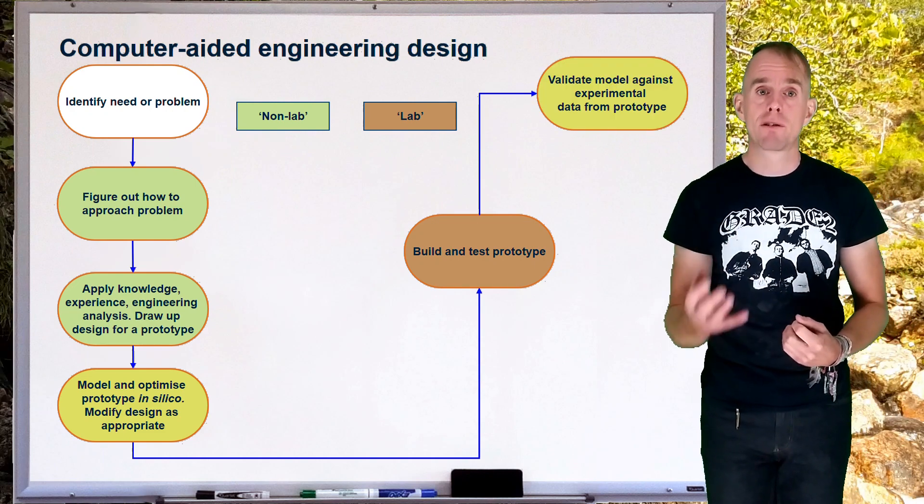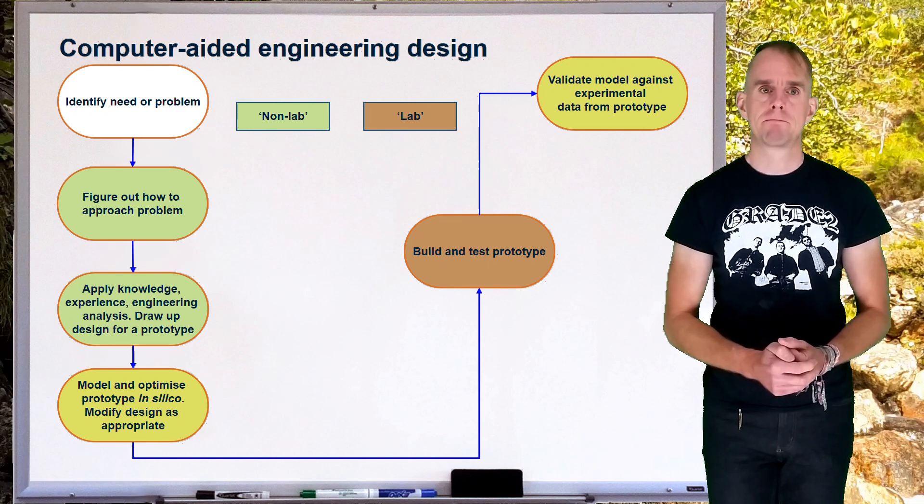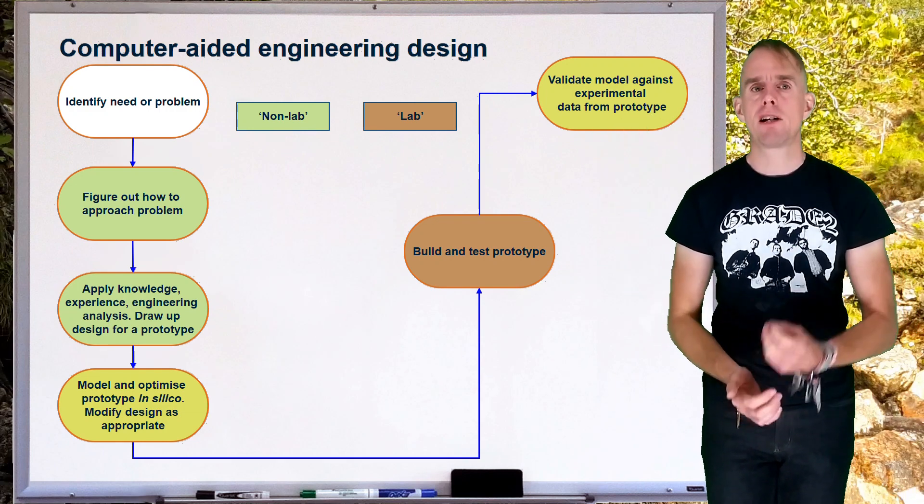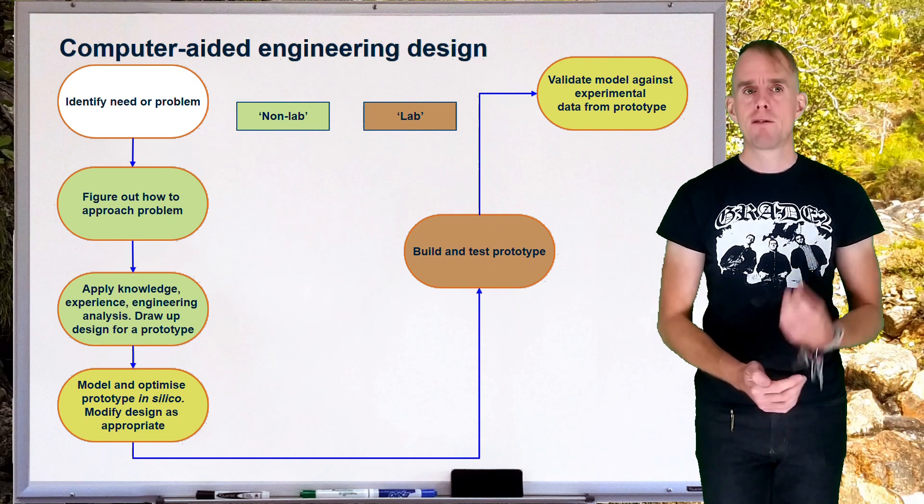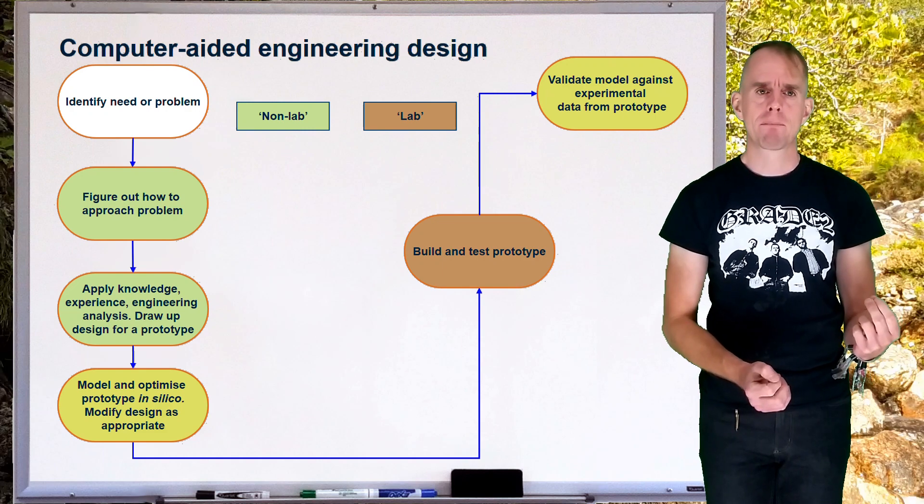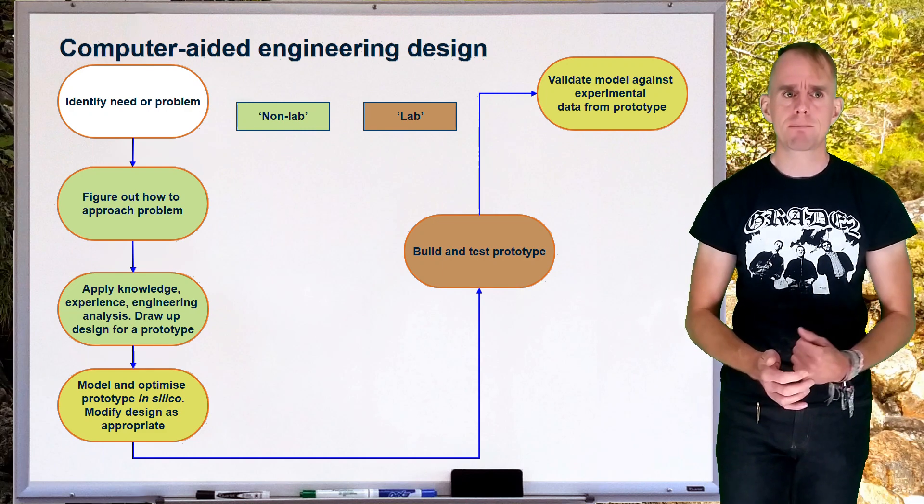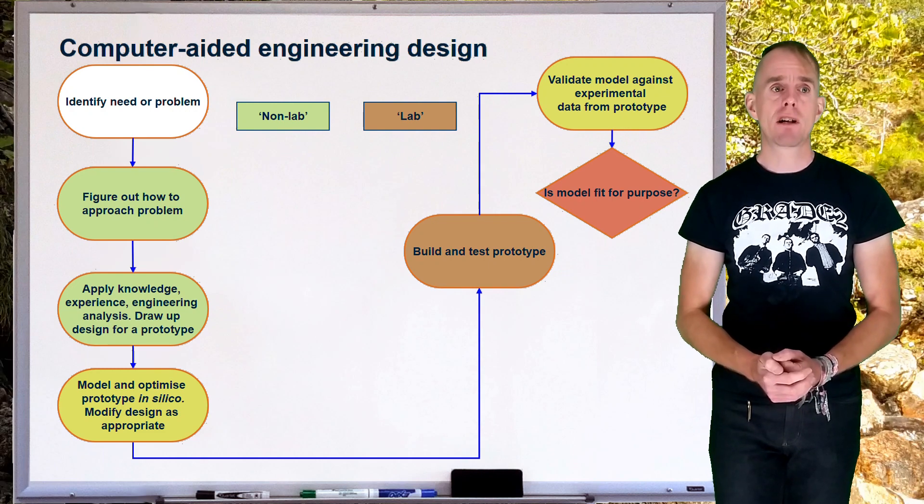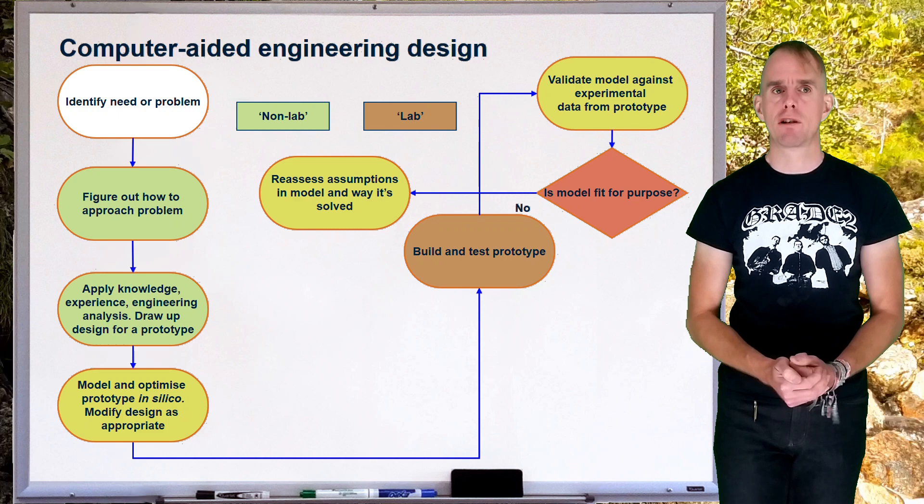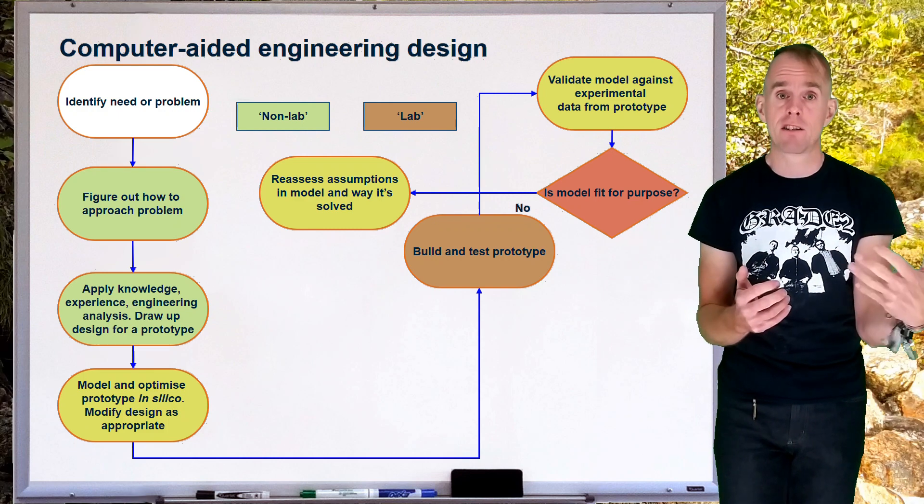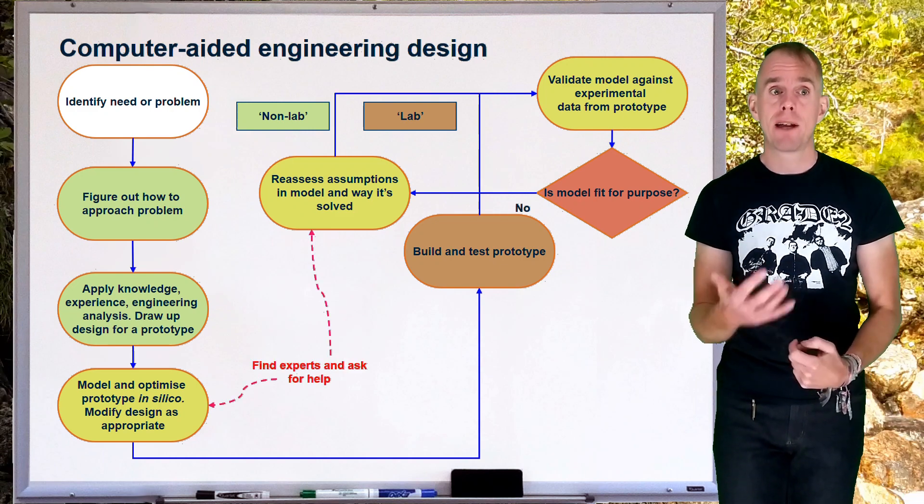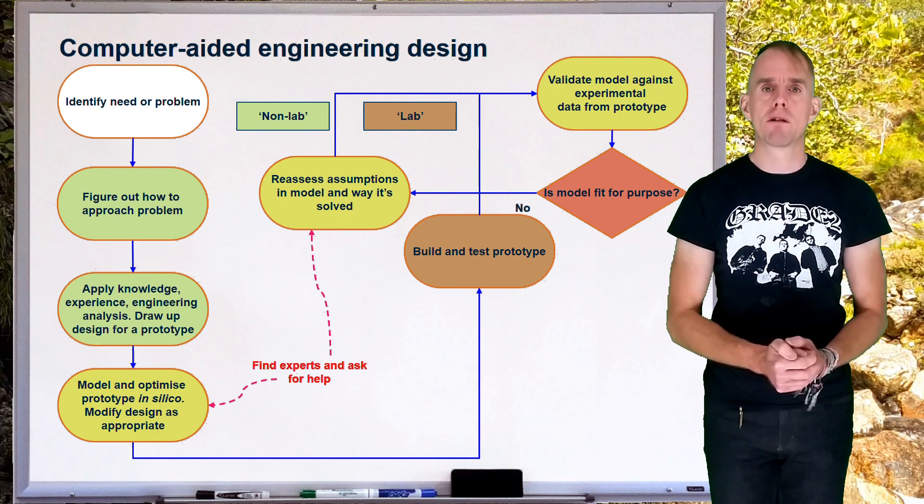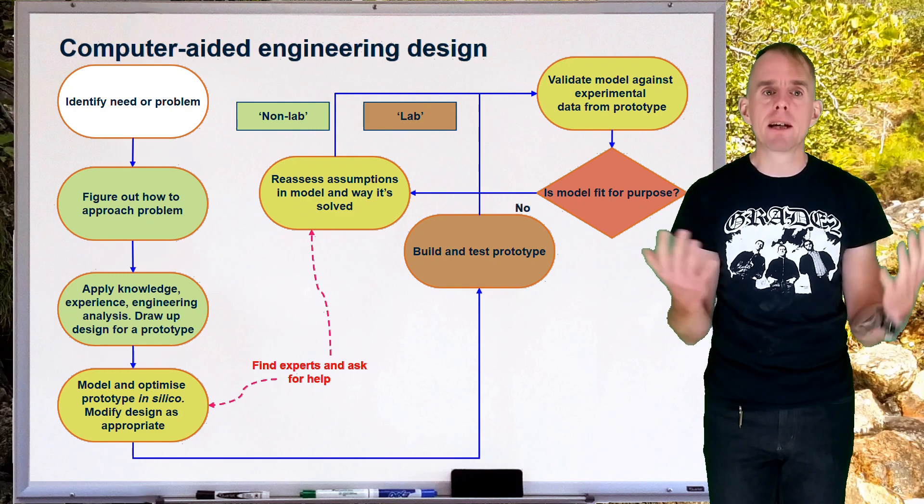Now, here on the whiteboard is one of the most critical steps in this entire scheme. Validation of the model against experimental data from the prototype. If the prototype is doing something that your model isn't doing, then there's a mismatch. We don't sufficiently understand our design. And so, it's not unusual at this point to go, model isn't fit for purpose. Okay, let's go and reassess the assumptions in the model, reassess the way it's solved, and see if we can narrow the gap between our model of reality and actually what reality is. And so, at that point, again, we may need expert input to help us. And so, there'll be a loop here that you'll go around looking at your model results, looking at your experimental results and going, okay, we can get these to match now.